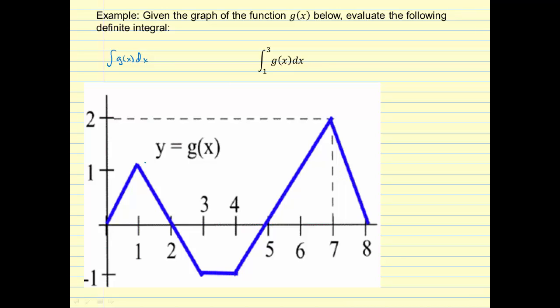So the idea here is this can be represented by the area of a region. And this region goes from one up to three, because we have from one to three. And it's the area between the graph and the x-axis.